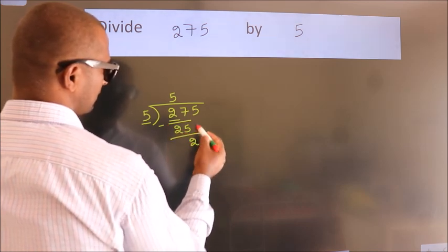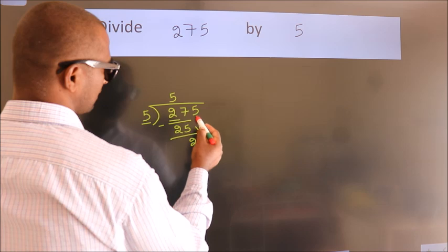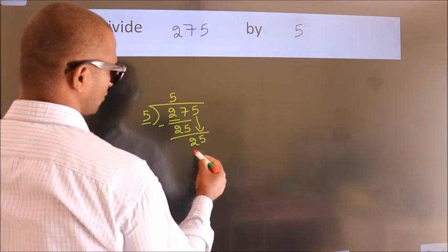After this, bring down the next number. So 5 down, giving us 25.